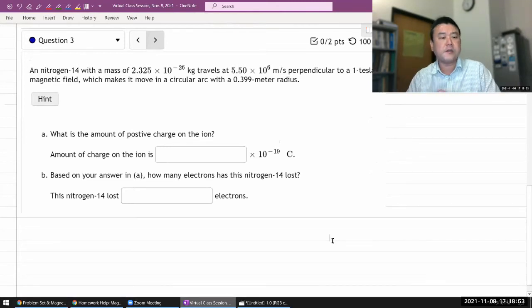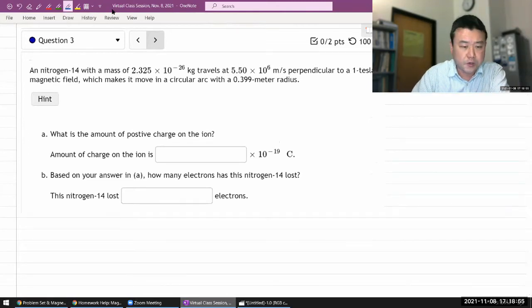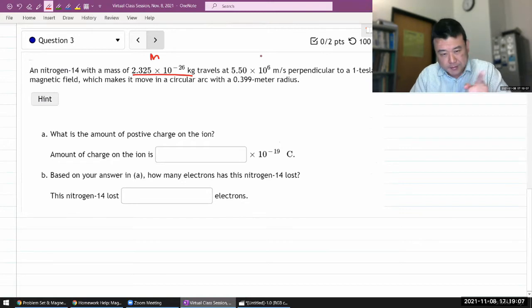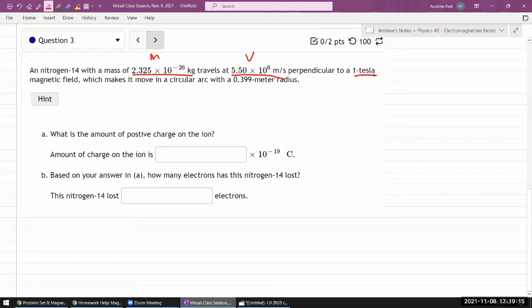Let me read this question. It says a nitrogen with some mass travels at some speed, which seems high but that's the number they're giving me, perpendicular to a one tesla magnetic field, which makes it move in a circular arc with some radius r. I think I'm going to have to diagram this.